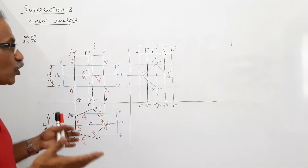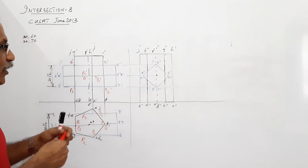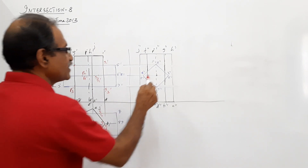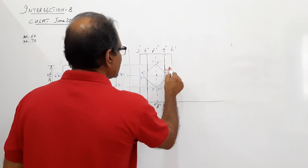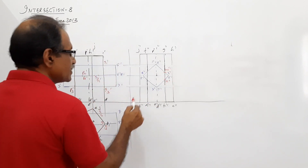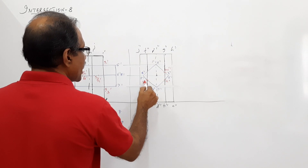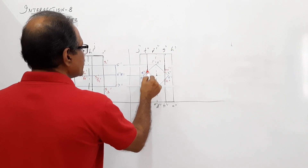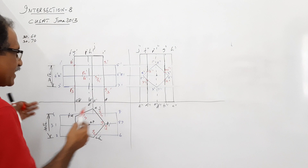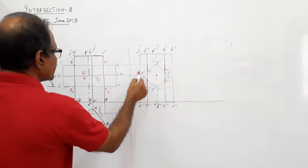Are there more points? Yes — in the end view there are additional points: M-double-dash, N-double-dash, R-double-dash, and S-double-dash, on this side. Draw horizontal lines from these end view points and bring them into the elevation.